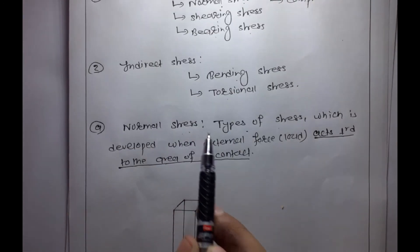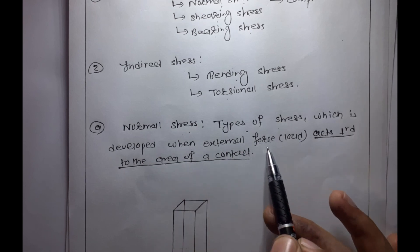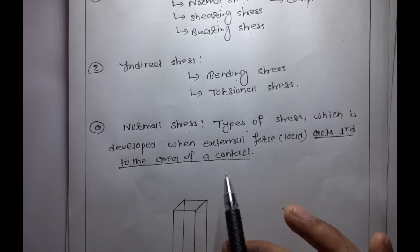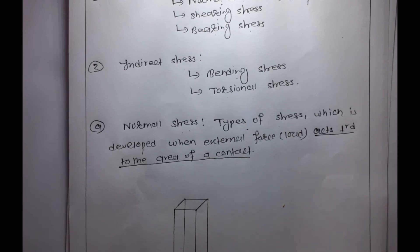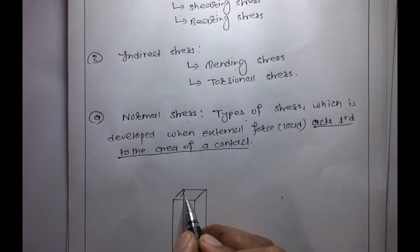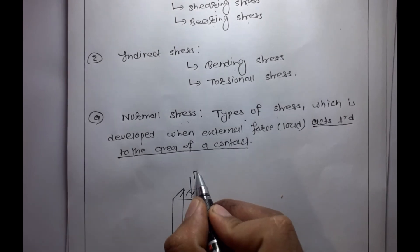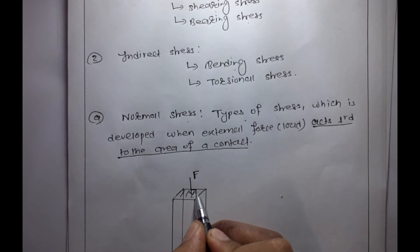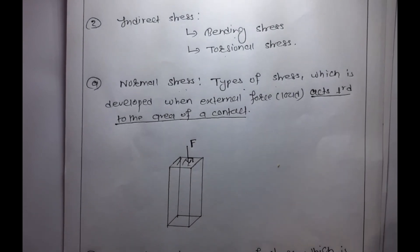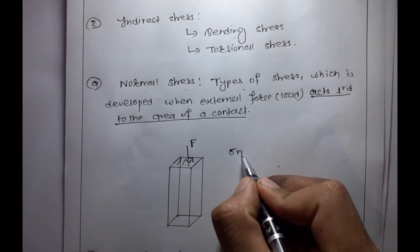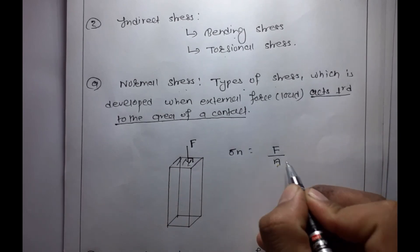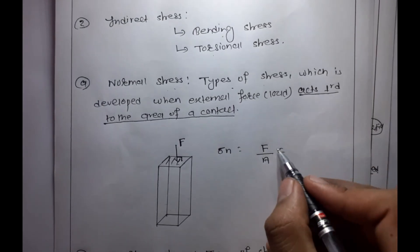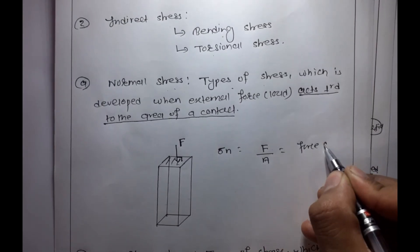Normal stress is the type of stress which is developed when an external force or load acts perpendicular to the area of contact. When the force acts perpendicular to the surface of contact, the developed stress is called normal stress. The stress is simply force divided by area.